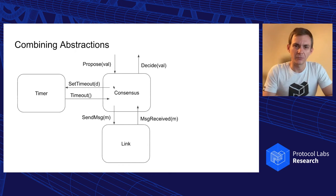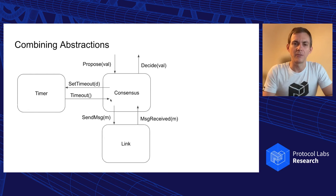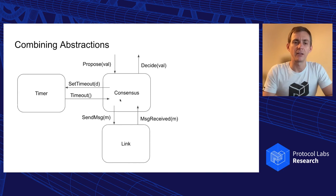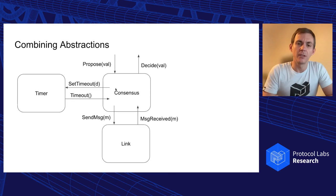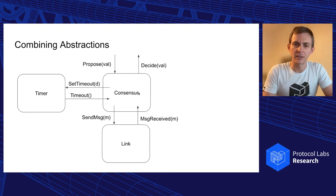For example, when a proposed event occurs at the consensus abstraction, it might trigger a send-message event to tell the other node the proposed value, and trigger another event setting a timeout in case the other node doesn't respond. When a message is received, it changes some internal state. If the other node agrees with the value, it can trigger the decide event, and then ignore the timeout event if it occurs. The bottom line is that the implementation — the algorithm executed — just describes reactions to events and conditions under which new events are triggered.